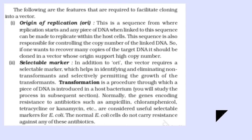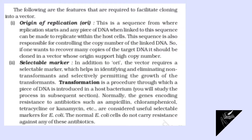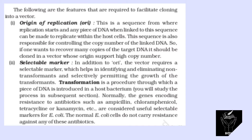Number 2: Selectable Marker. In addition to ori, the vector requires a selectable marker which helps in identifying and eliminating non-transformants and selectively permitting the growth of the transformants. Transformation is a procedure through which a piece of DNA is introduced in a host bacterium. Normally, the genes encoding resistance to antibiotics such as ampicillin, chloramphenicol, tetracycline, or kanamycin, etc., are considered useful selectable markers for E. coli.